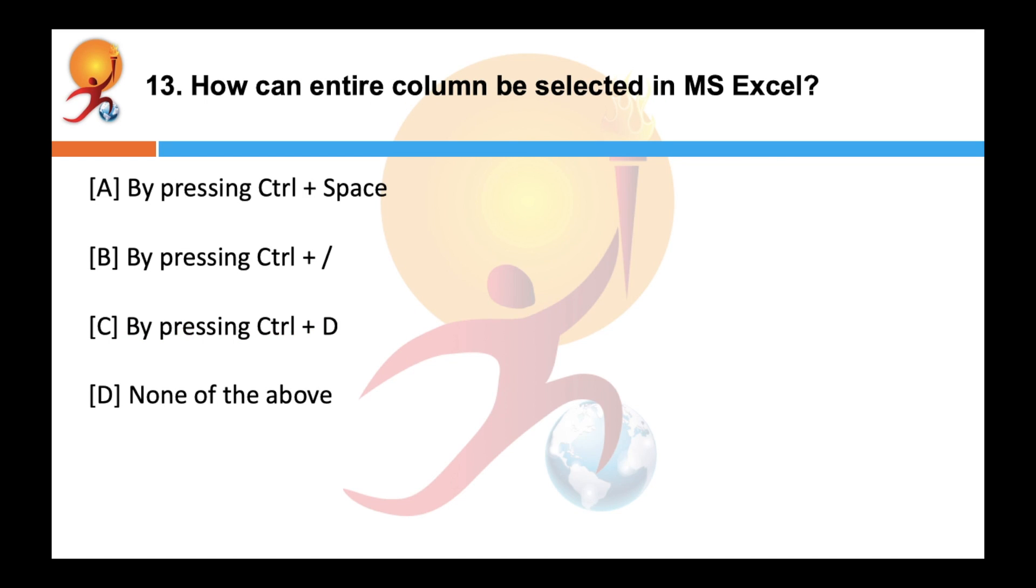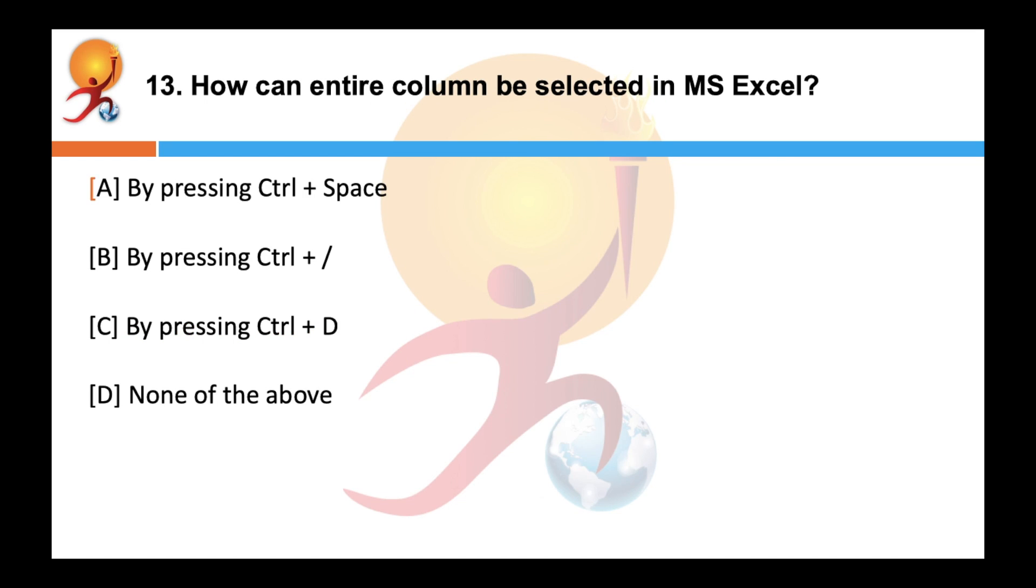How can an entire column be selected in an MS Excel? Correct answer is A. We can select the entire column either by clicking on the column alphabet or by pressing CTRL plus space bar. All the cells of the active column get selected.